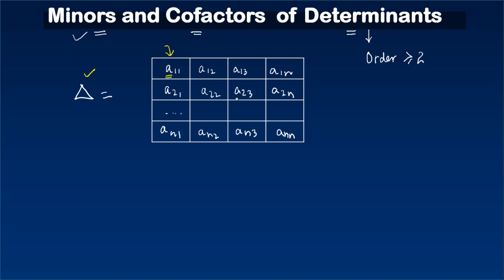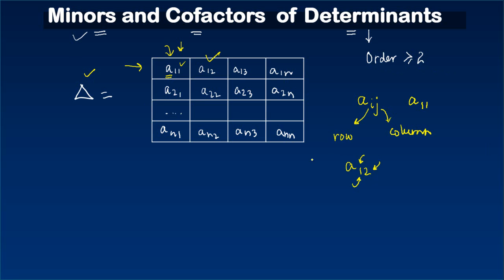The elements of a determinant can always be referred to as a_ij, where i represents the row number to which the element belongs and j refers to the column. For example, the first element belongs to the first row and first column, so it is written as a₁₁. Similarly, the second element is a₁₂ because it belongs to row one, column two.